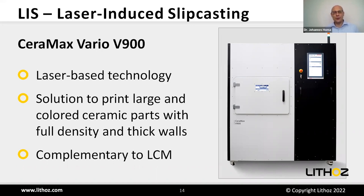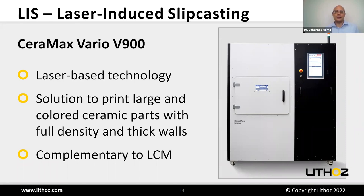Together with Alumina Systems we introduced Laser-Induced Slipcast — LIS. The machine we're using is the CeraFab Vario 900. It is a laser-based technology and a solution to print large parts and dark ceramics — always delivering full density, matching the same material properties as in conventional forming.